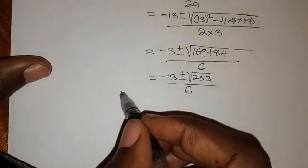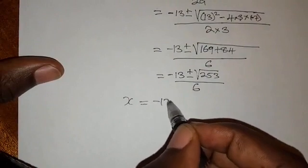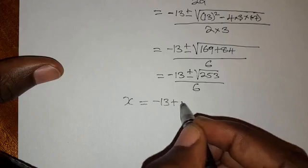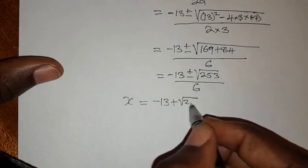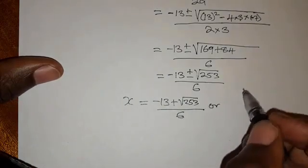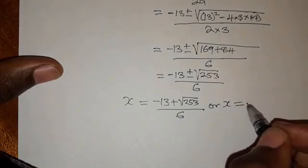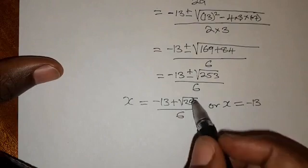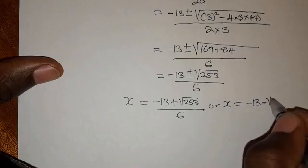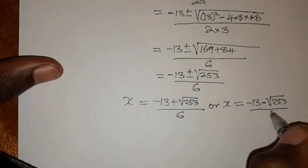So at this stage, we have x equals negative 13. We are going to take the positive part of this, so plus the square root of 253 over 6, or x equals negative 13 minus the square root of 253 over 6.